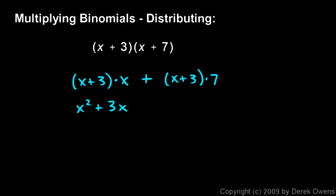And then I have this plus sign. And then this 7 gets distributed here and here. So I have plus 7x, and then plus 3 times 7, which is 21. And then I can combine the 3x and the 7x. So this becomes x squared plus 10x plus 21, and that's my answer. And the 10x there came because 3x and 7x are like terms, and they add up to 10x.